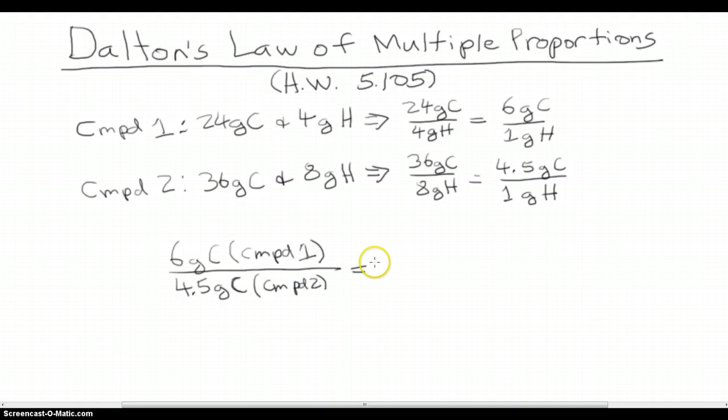And this is 1.33 grams of carbon in compound 1 for every 1 gram of carbon in compound 2, but that's just equal to, pretty close anyway, 4 grams of carbon in compound 1 to 3 grams of carbon in compound 2. We just take 1.33 times 3 and we get 3.99, which is basically 4, and 1 times 3 is 3.